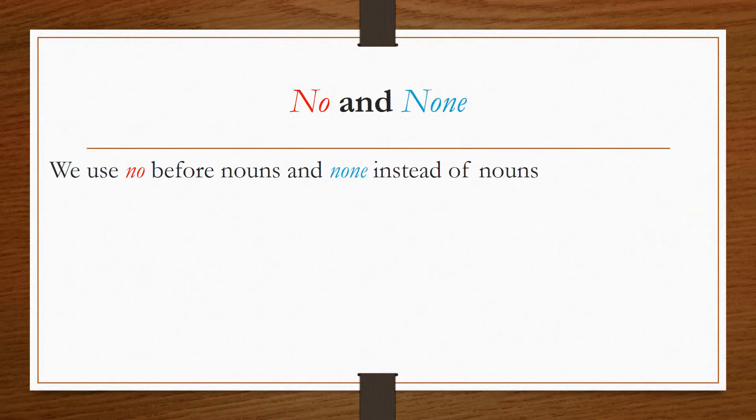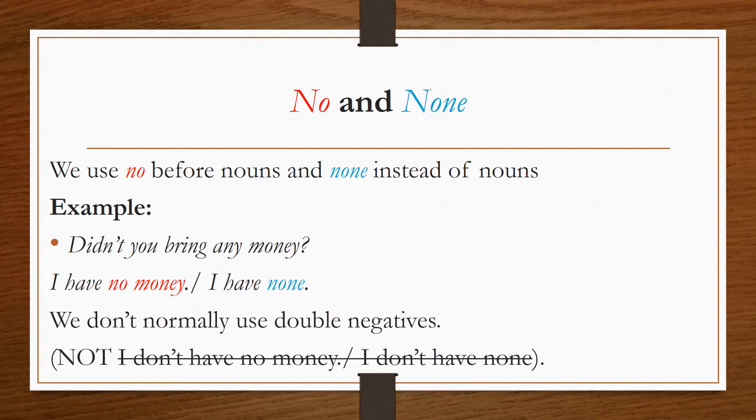No and none. We use no before nouns and none instead of nouns. For example, didn't you bring any money? The answer would be, I have no money, or I have none. We don't normally use double negatives. We can't say I don't have no money, nor can we say I don't have none.